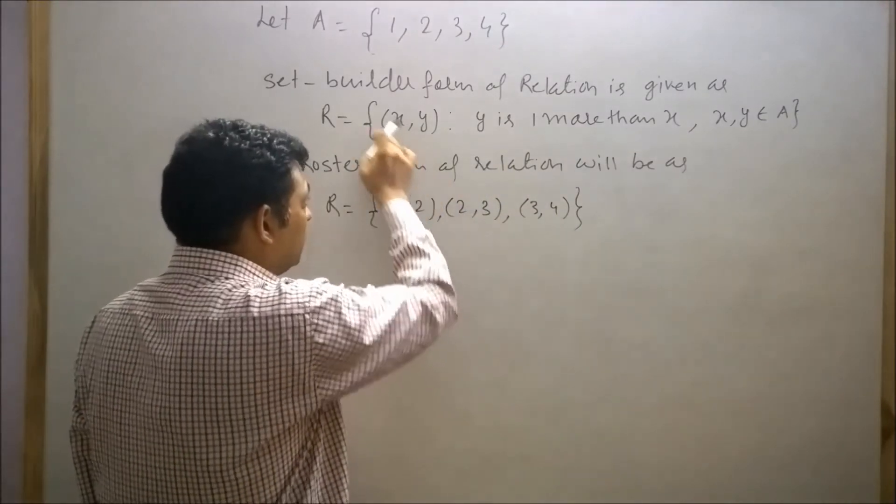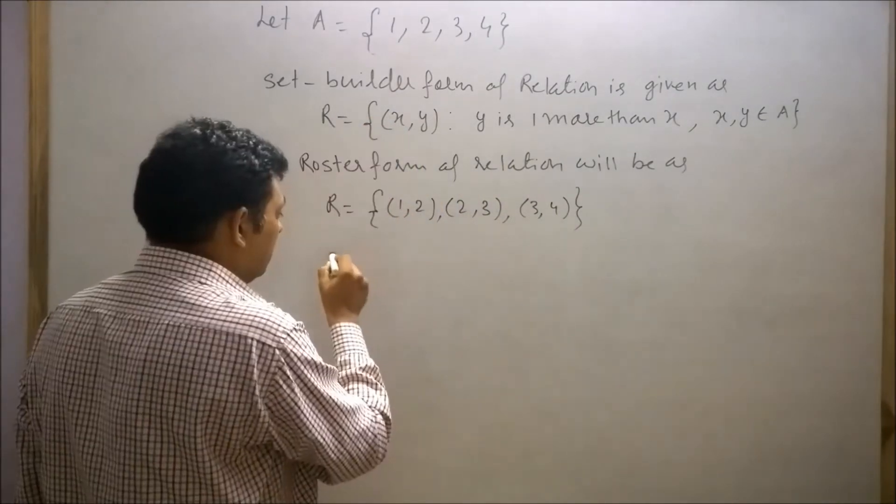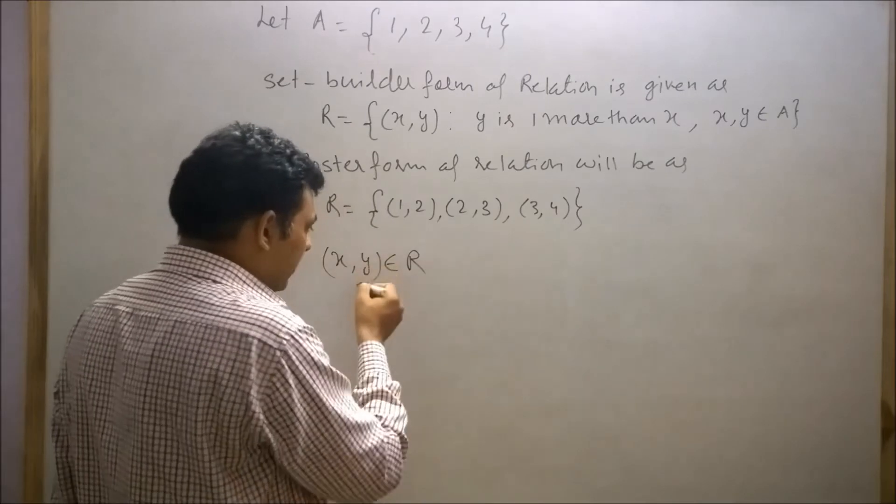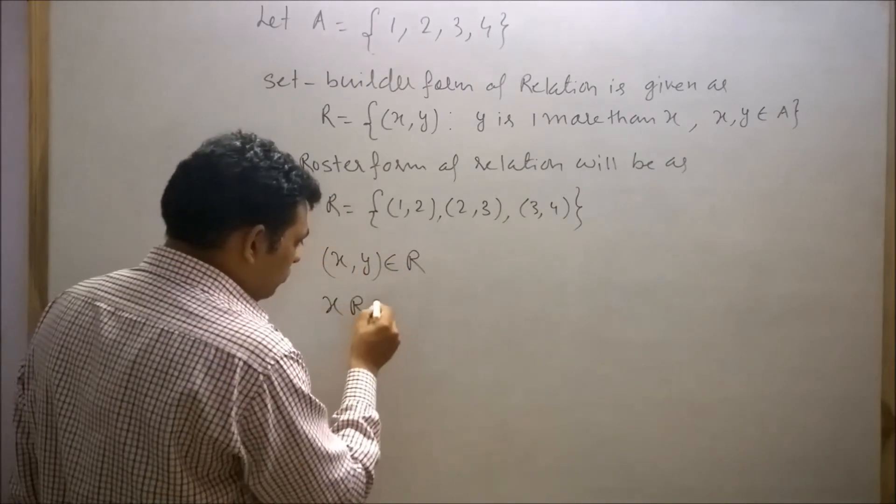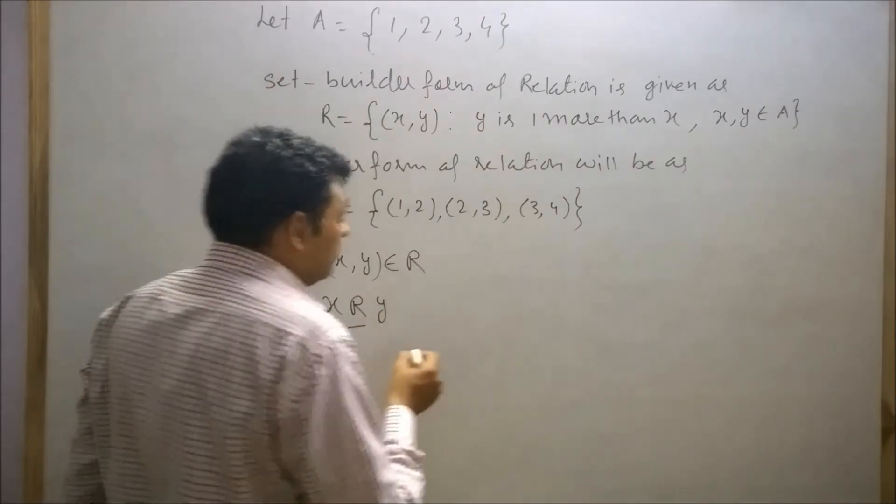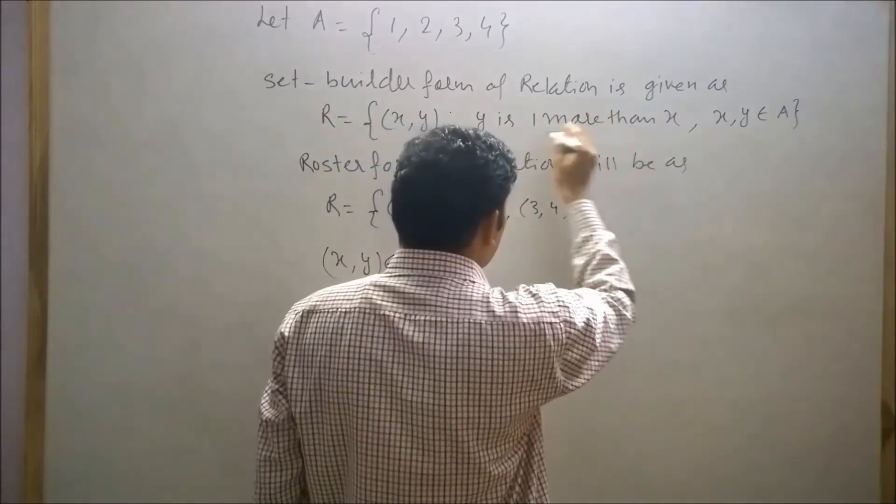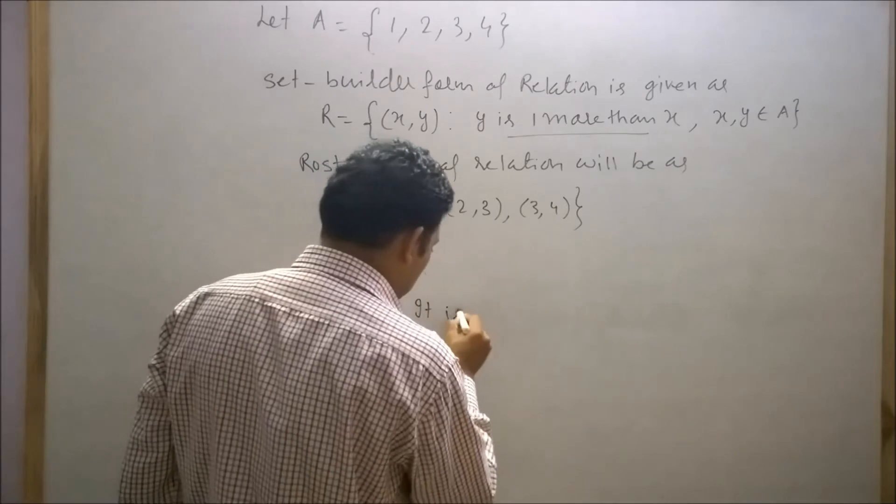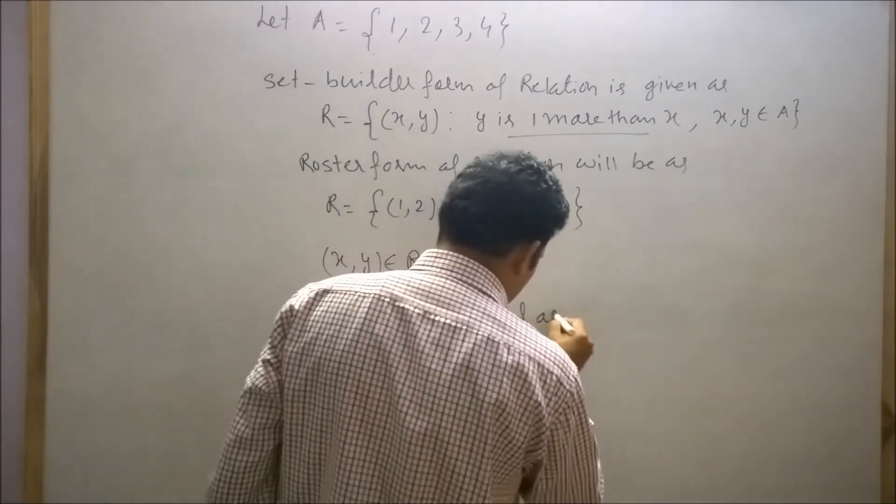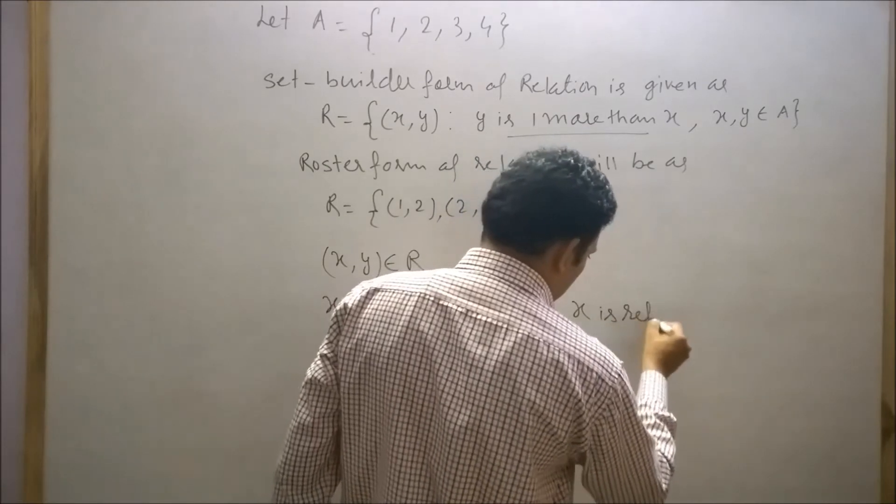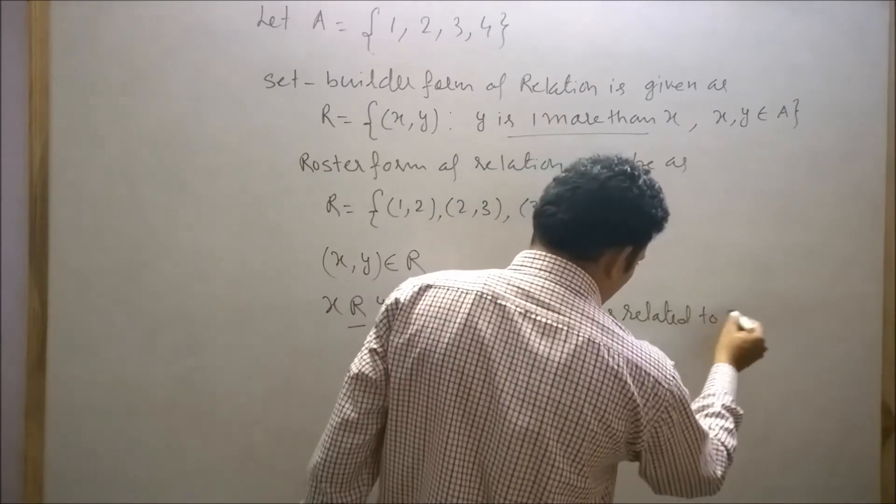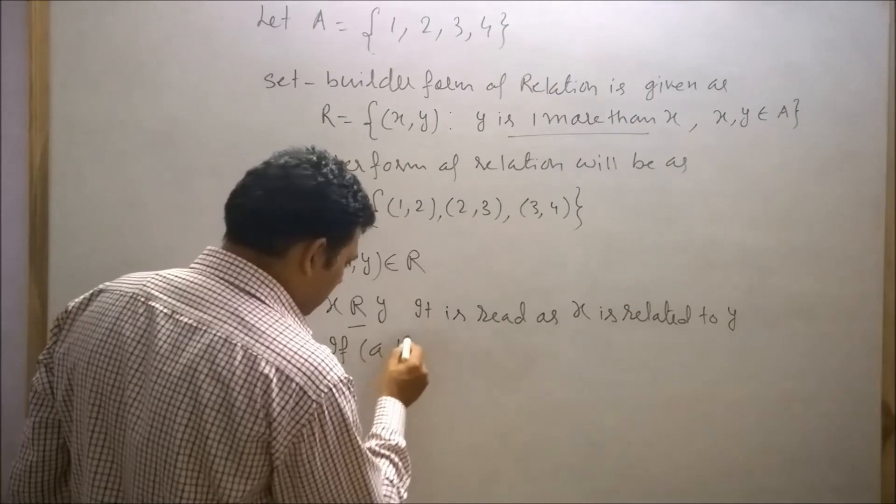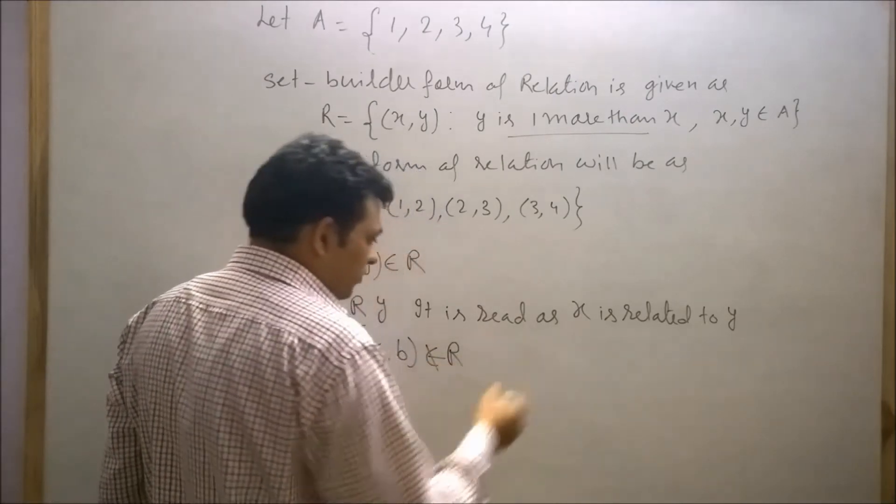So the roster form of this relation is: (x, y) belongs to relation R. We can also write it as x related to y, where R represents the relationship 'is 1 more than'. It is read as x is related to y. If the ordered pair (A, B) does not belong to R, it can be represented as A not related to B.